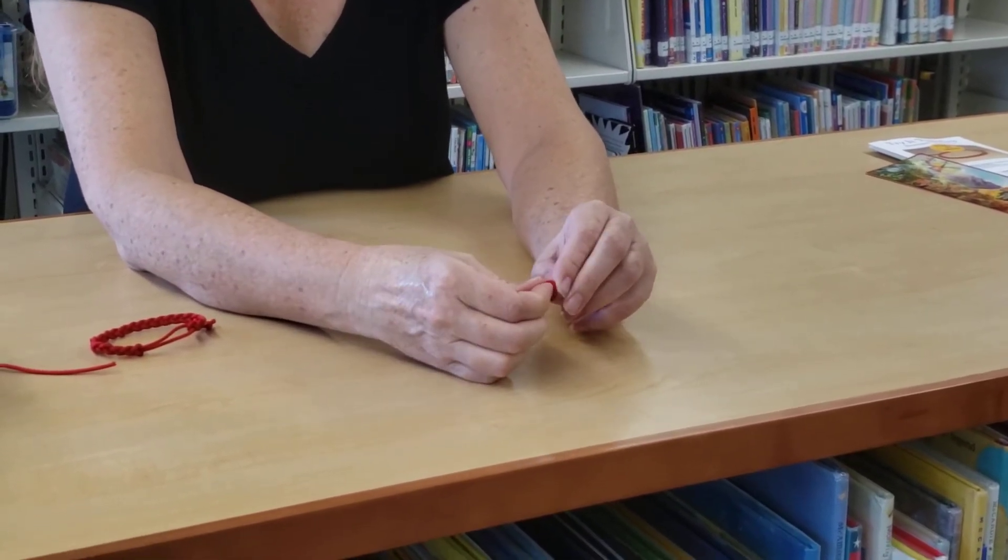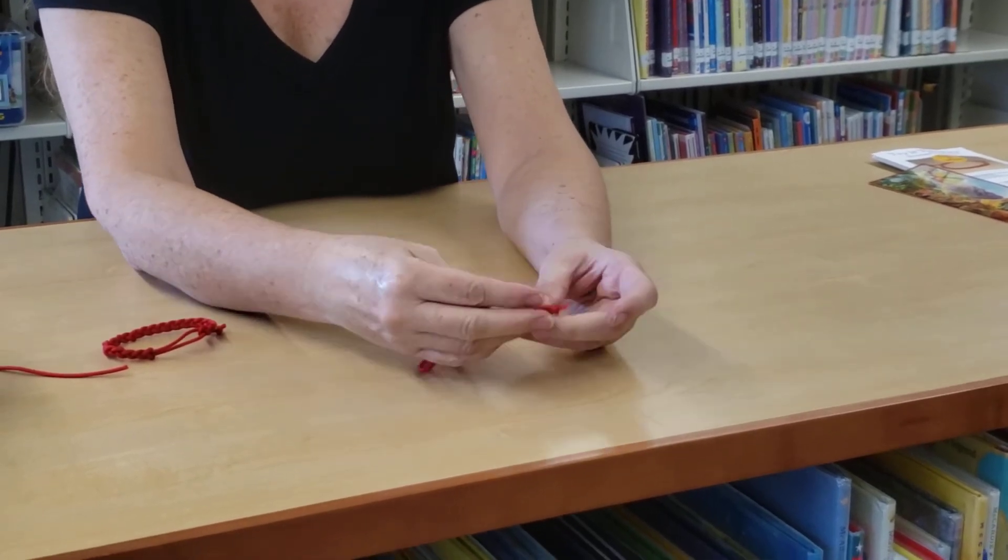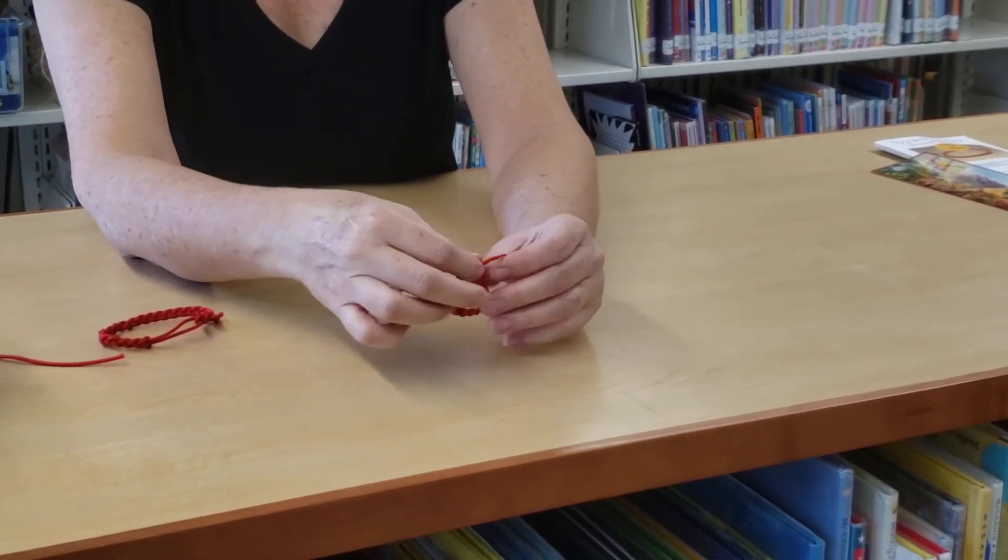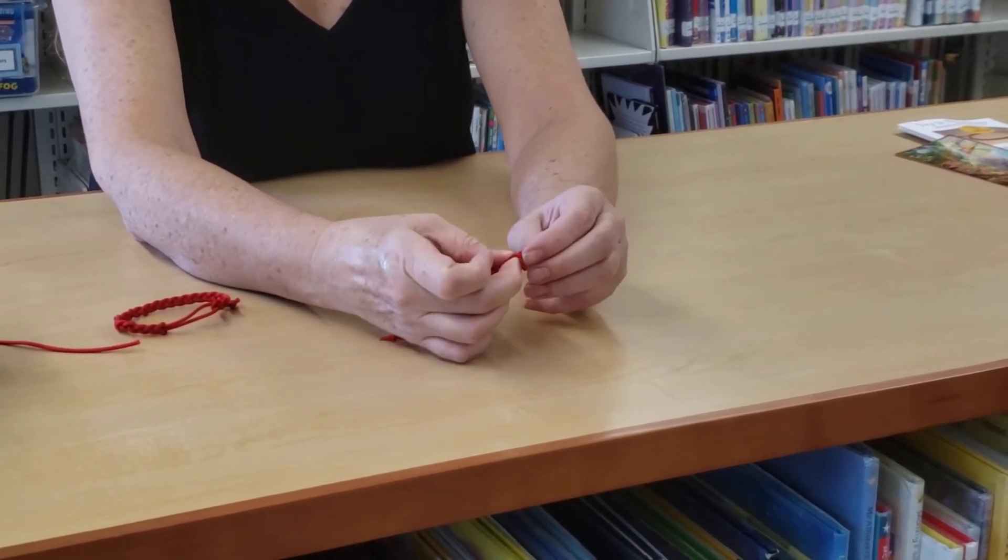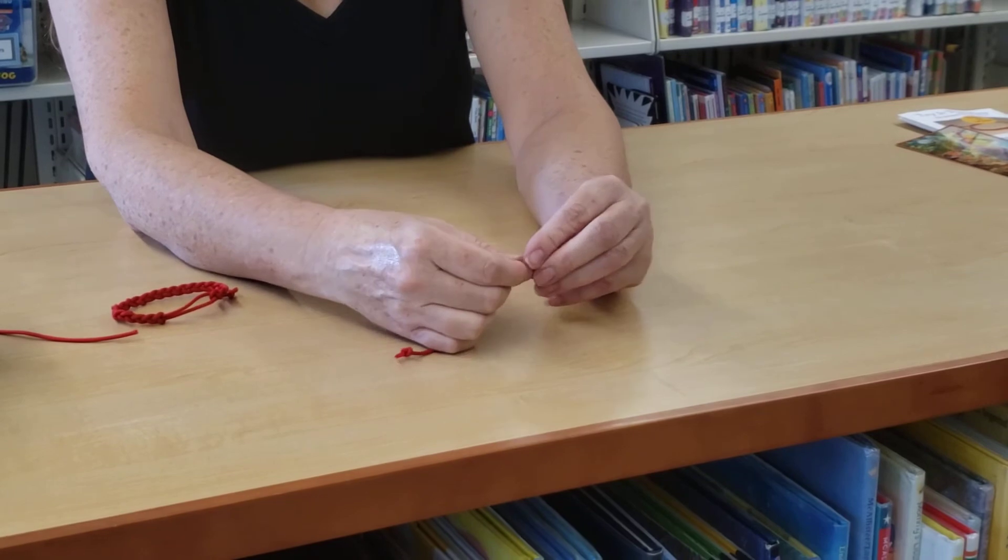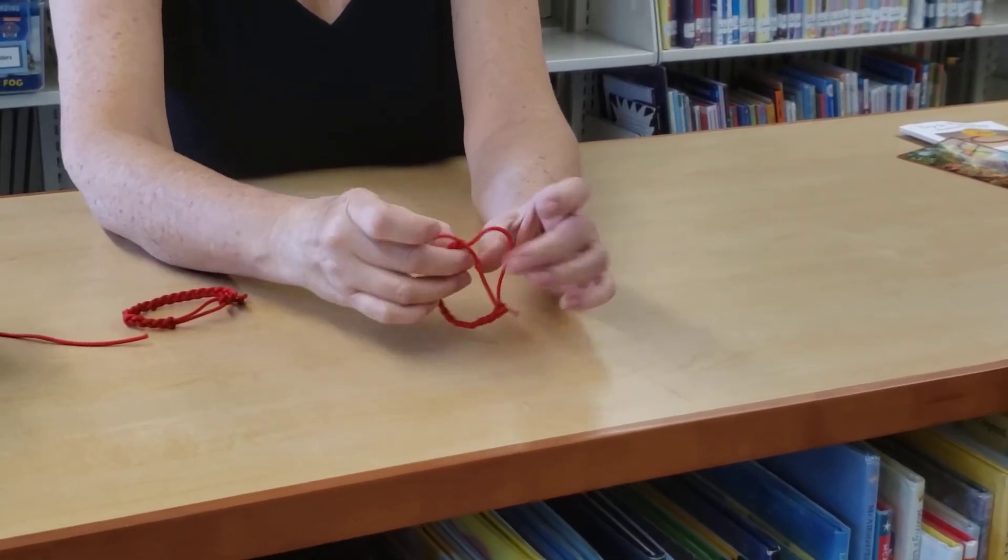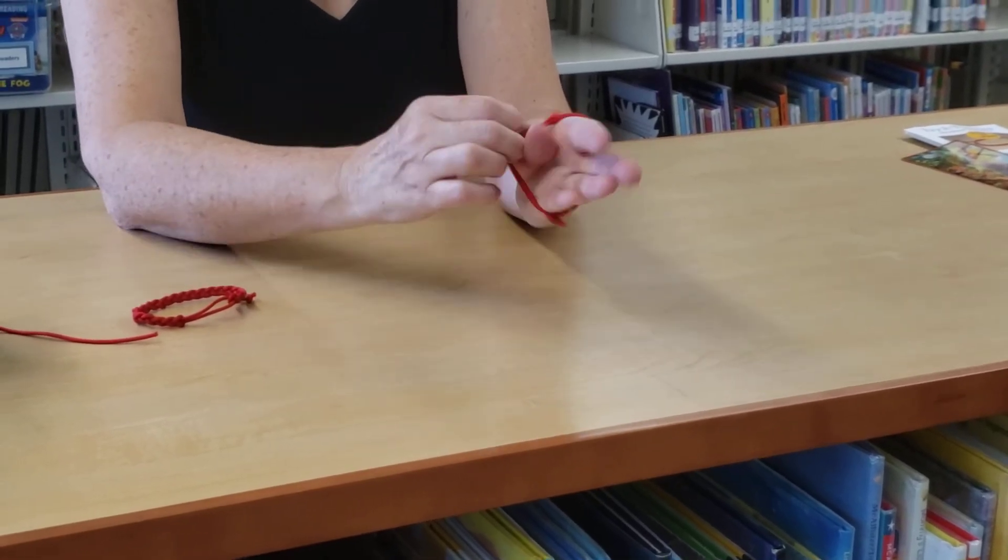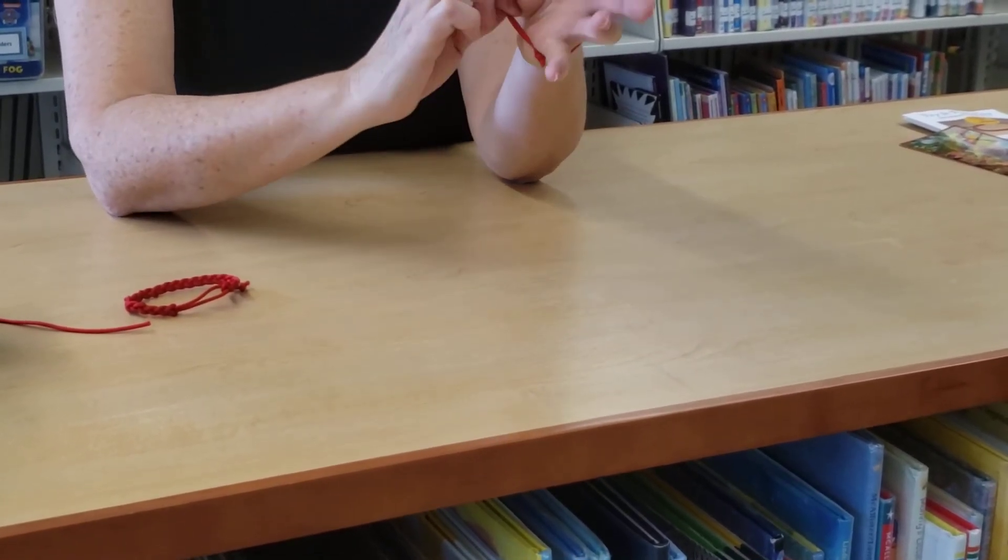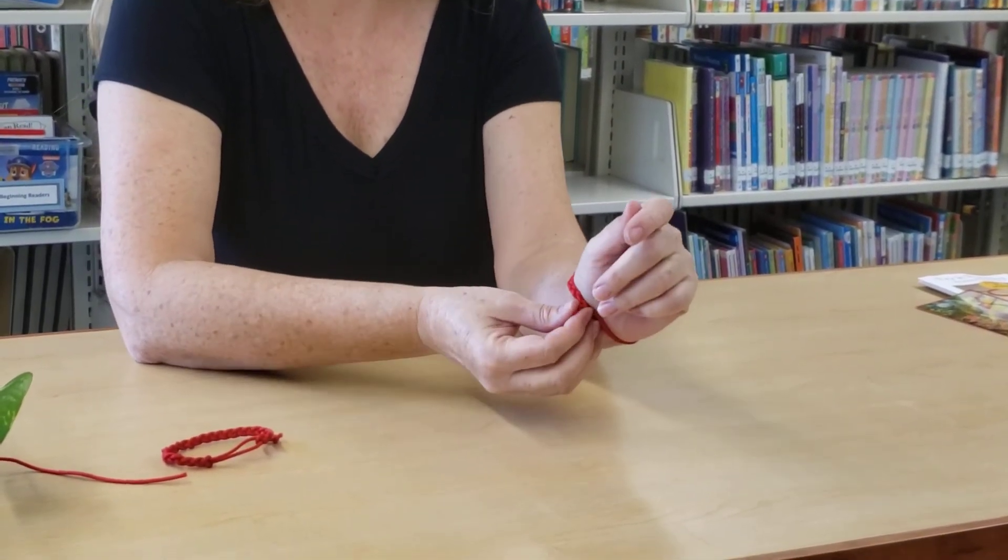So this one doesn't have any excess, but if you have extra long string, you're gonna just trim off the excess and you're gonna tie a knot right at the end. And that's gonna keep your bracelet from sliding all the way through and coming apart. And slide that there, and then now you can slide this all the way open without fear of it sliding right through.